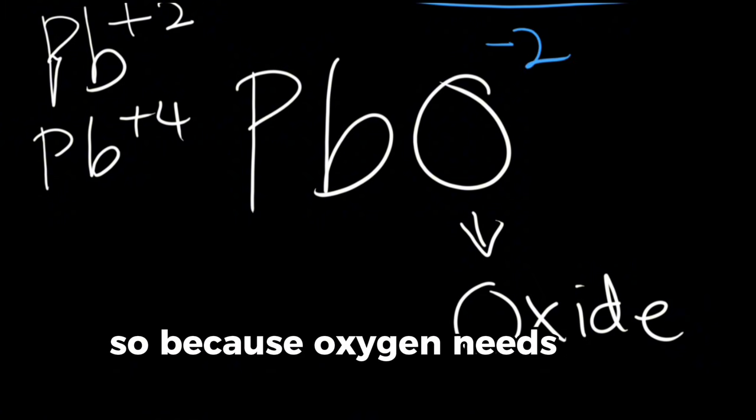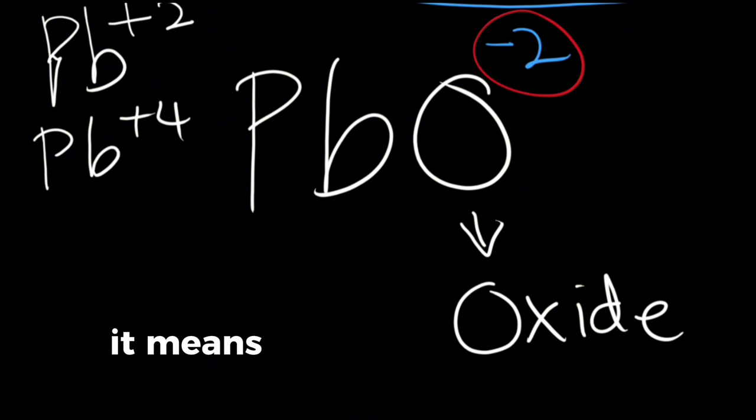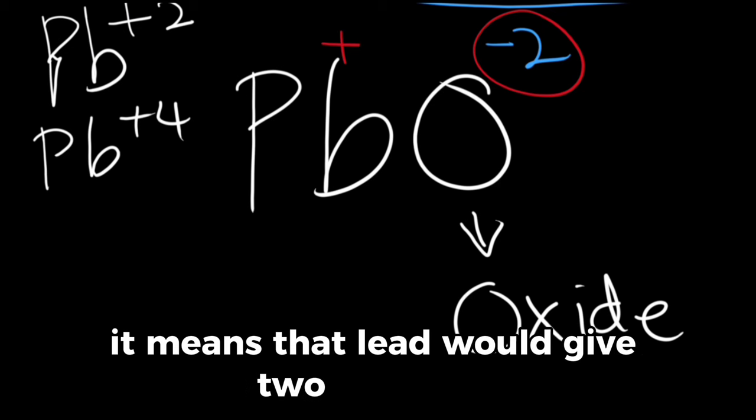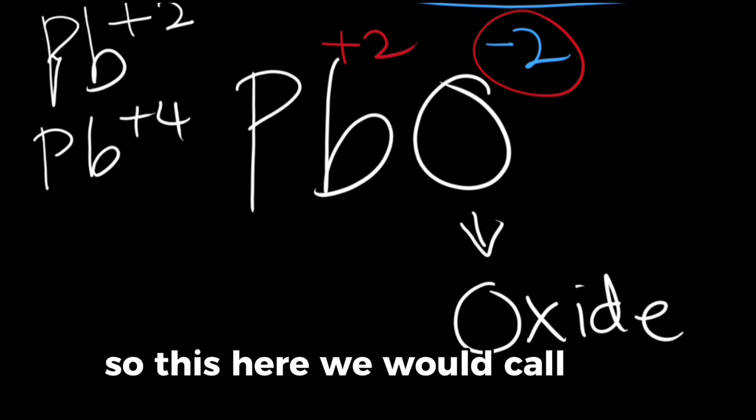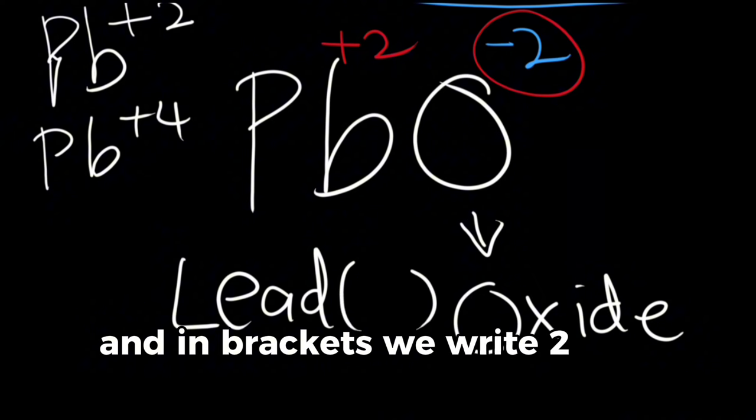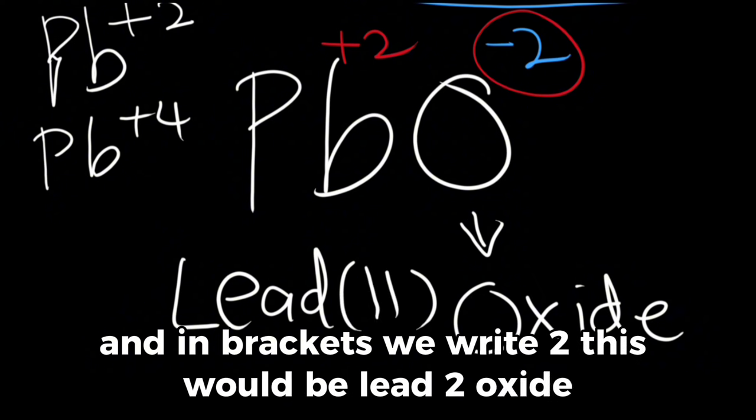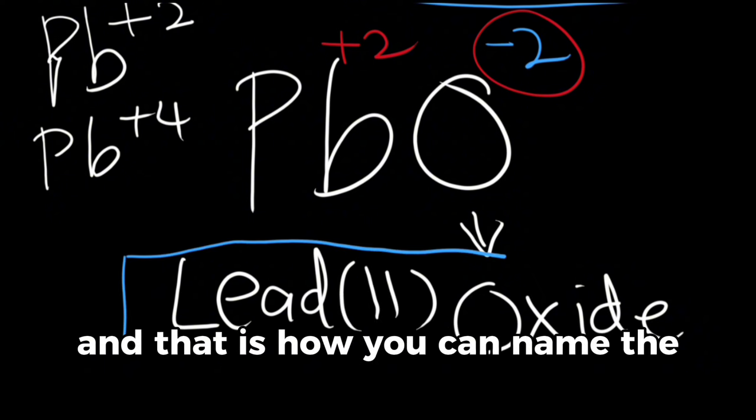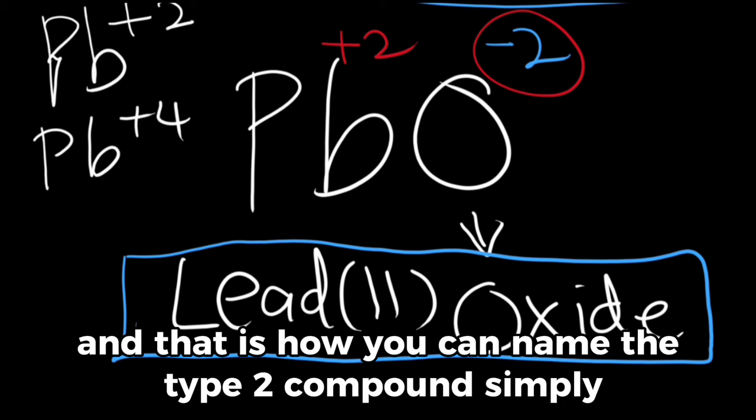Because oxygen needs two electrons, it means that lead will give two electrons. So this here we will call lead and in brackets we will write 2. So this will be lead(II) oxide and that is how you can name the type 2 compound simply.